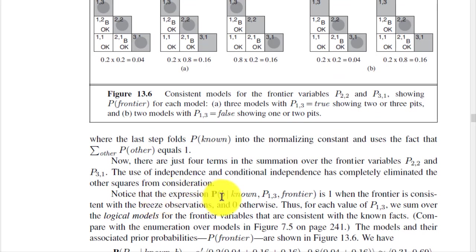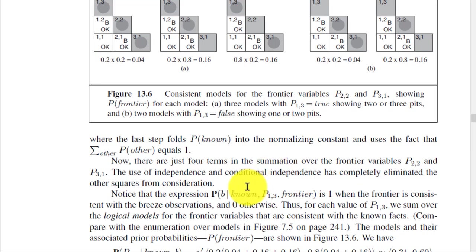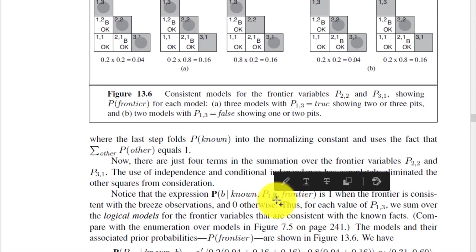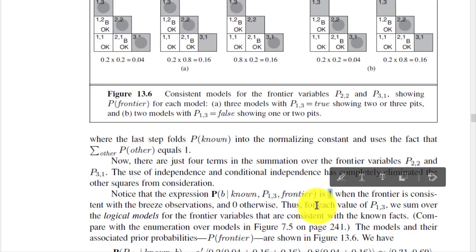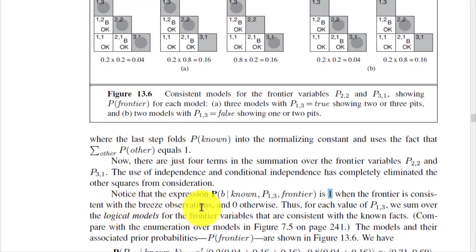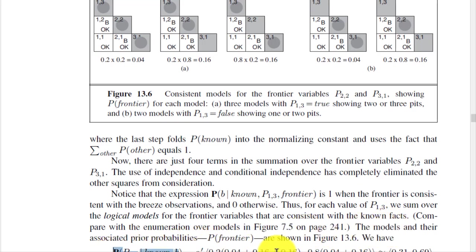The expression P(b_known | P₁₃, frontier) is 1 when the frontier is consistent with breeze observations and 0 otherwise. We divide probabilities into zero and one: it is 1 when there is a breeze and there is a frontier at position (1,3), and we take the product of 1 when the frontier is consistent with observations. For each value of P₁₃ we sum over logical models for the frontier variables that are consistent with the known facts.